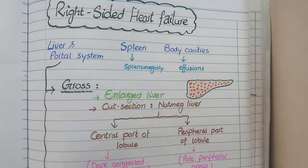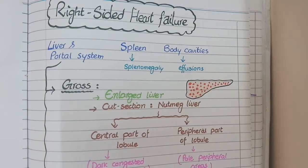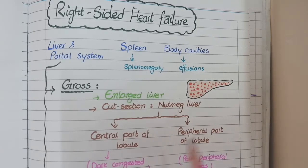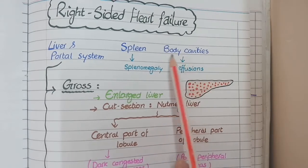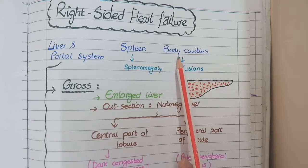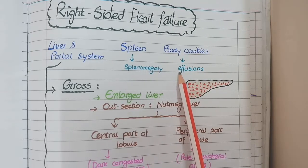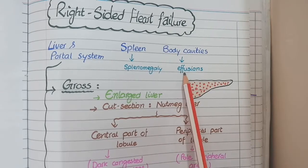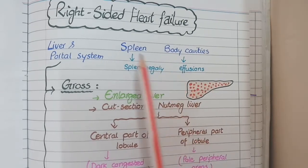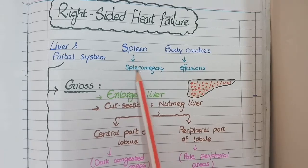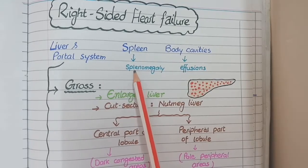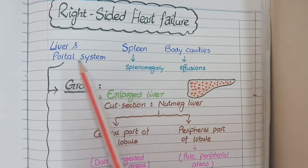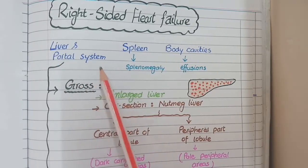The right side of the heart receives blood from all of the body, so failure of the right-sided heart causes edema in almost all parts of the body. If this edema occurs in body cavities such as the peritoneum and pleura, it is called effusion. If it occurs in the spleen it causes splenomegaly, and if it occurs in the liver and portal system it is known as hepatomegaly.